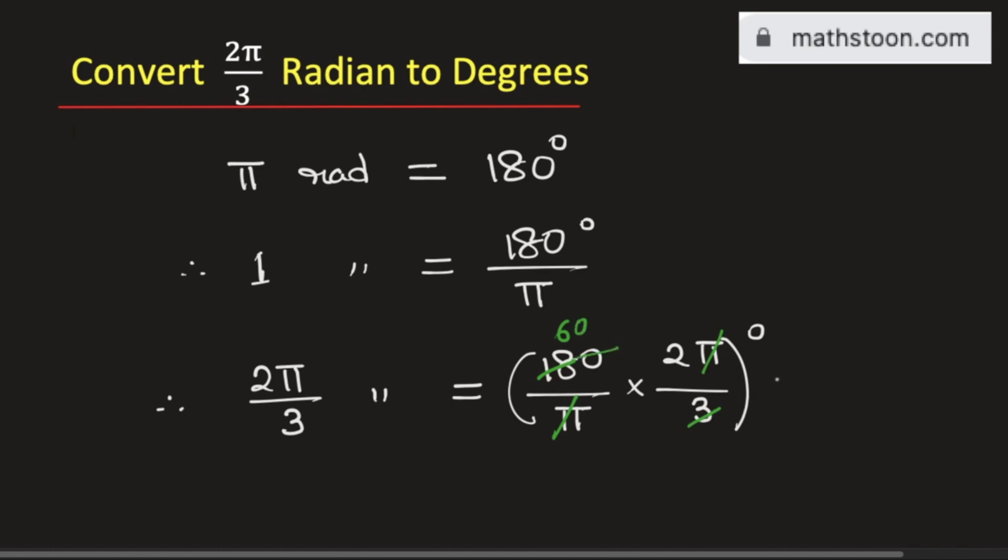So finally we get this is equal to 60 times 2 which is 120 degrees. So 2π divided by 3 radian is equal to 120 degrees. And this is our final answer. Thank you for watching.